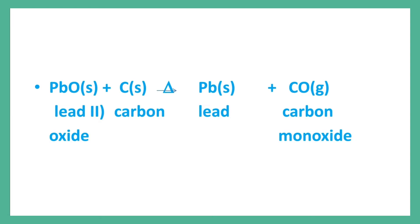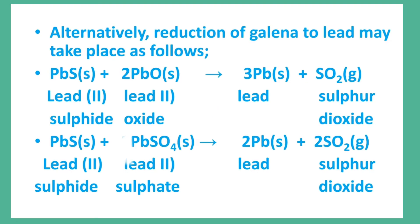The product is called PbO. PbO plus CO gives Pb plus CO2. In this case, the equation is PbO reduced by carbon monoxide.